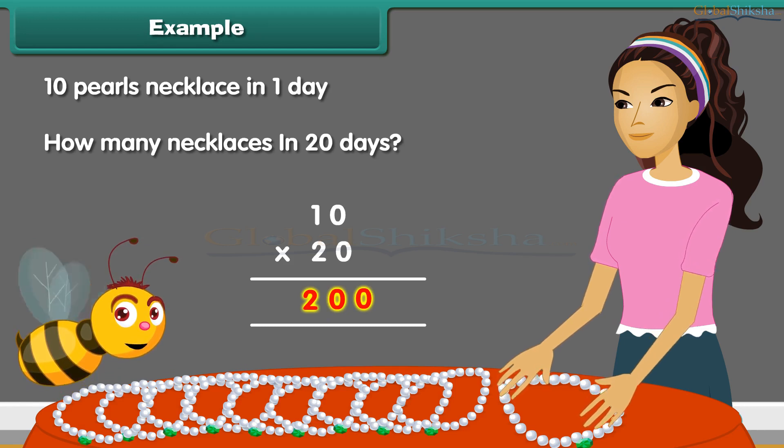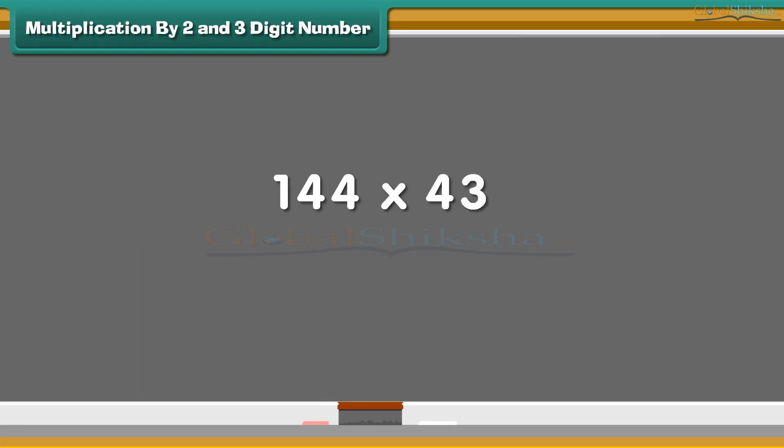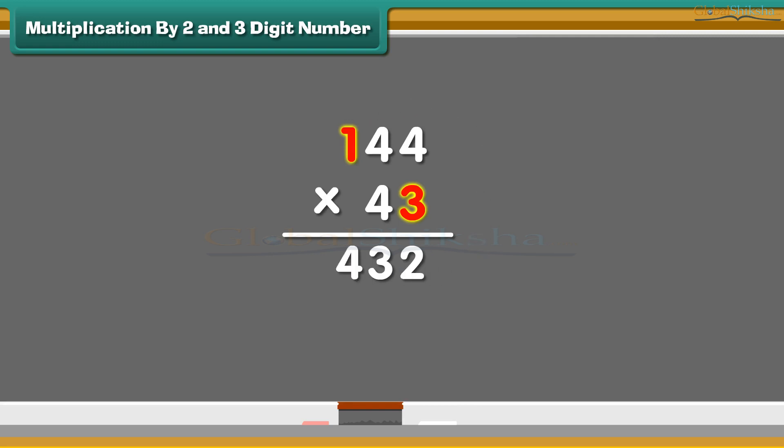Let us multiply 144 by 43. Start multiplication from 1's place. 3 times 4 are 12. Write 2 in the 1's place and carry the 1 forward to the 10's place. Multiply 3 from the number on the 10's place and add 1 which was carried forward. That is equal to 13. Write 3 in the 10's place and carry the 1 forward to the 100's place. Multiply 3 with the number on the 100's place and add 1 which was carried forward. We write 4 in the 100's place.